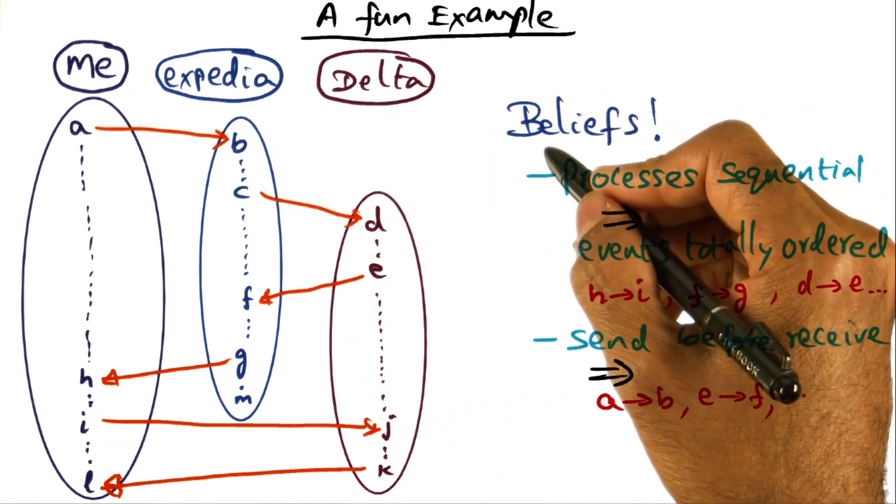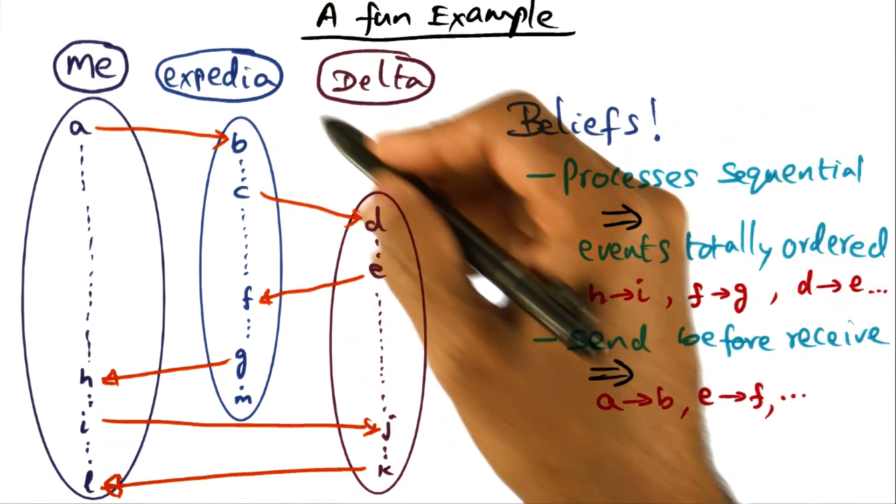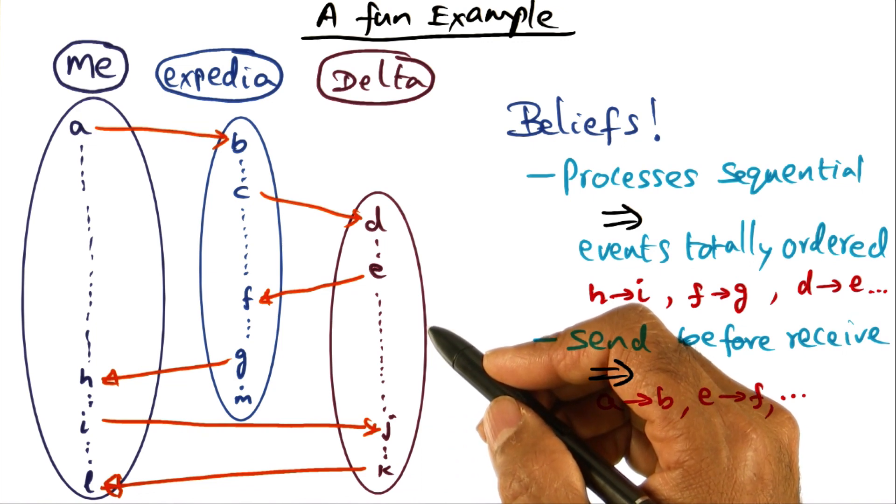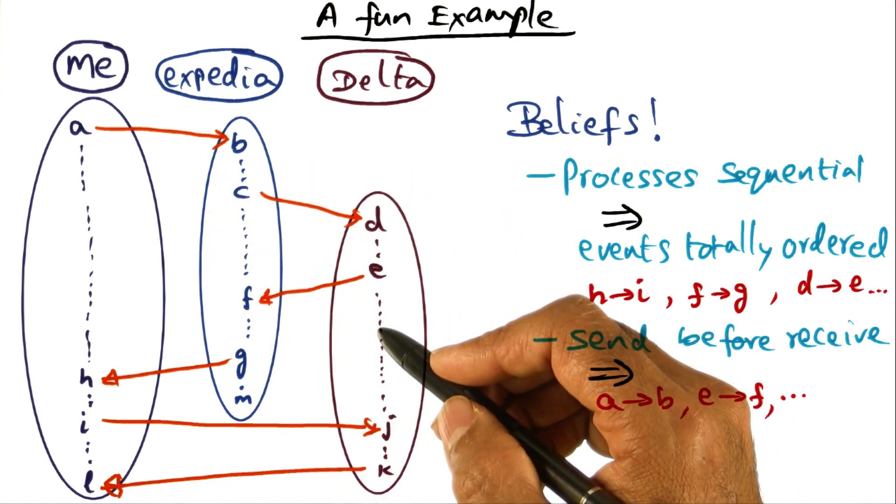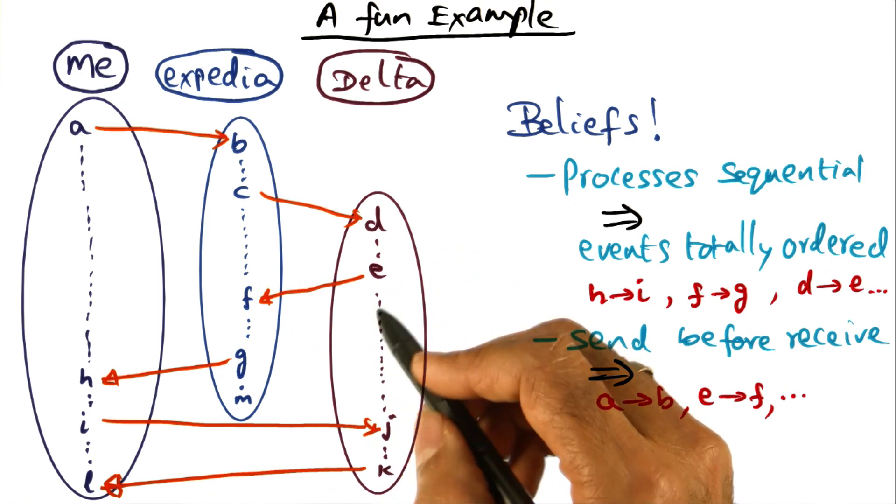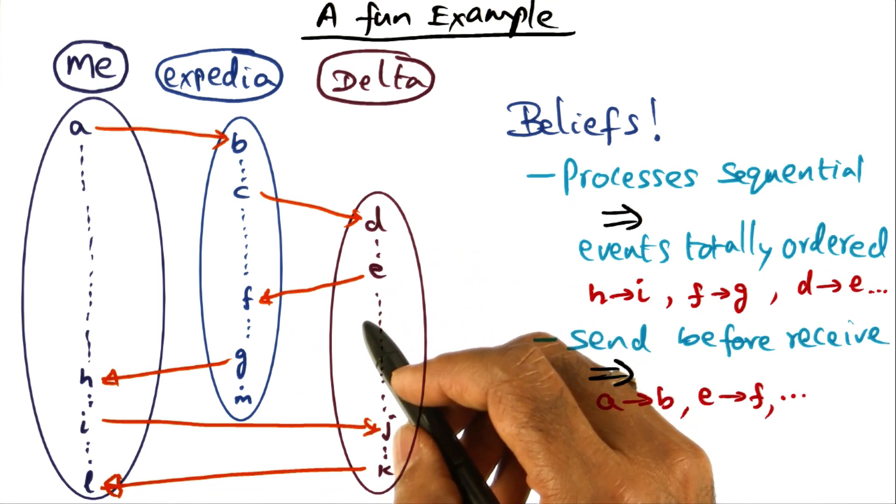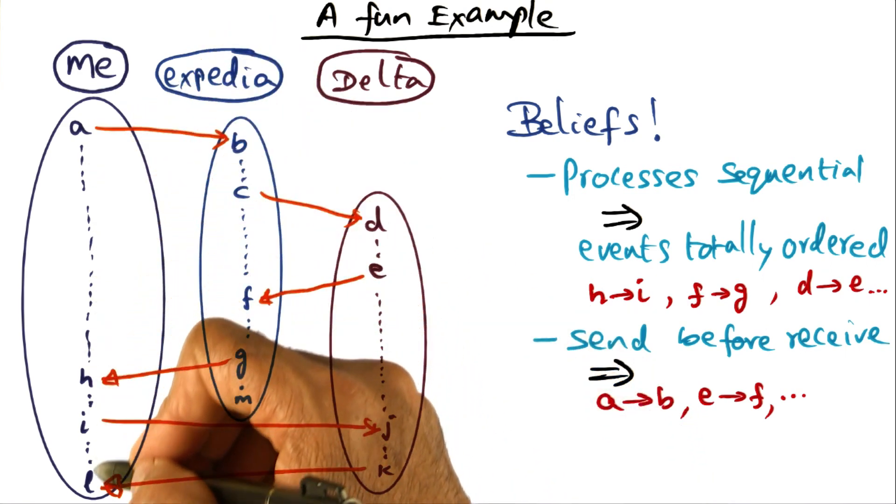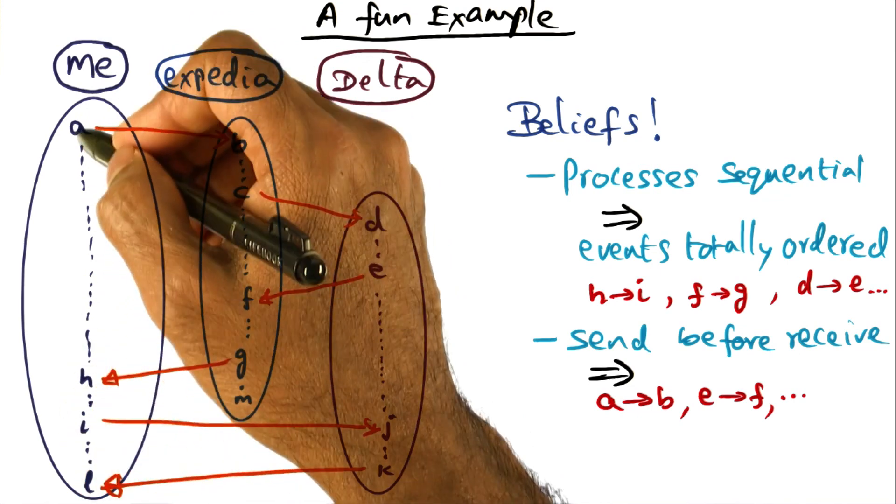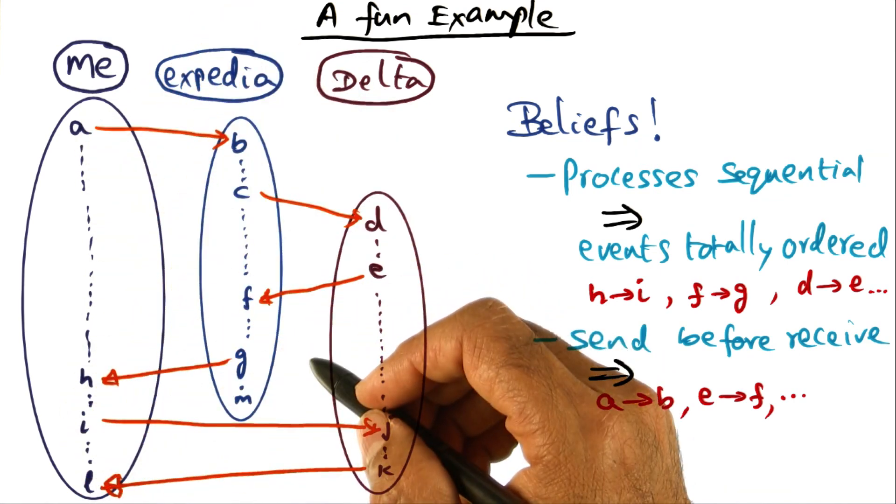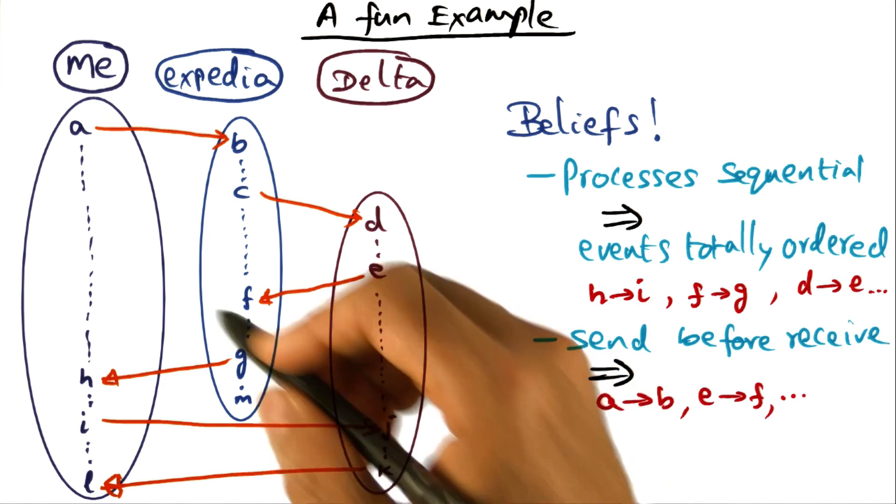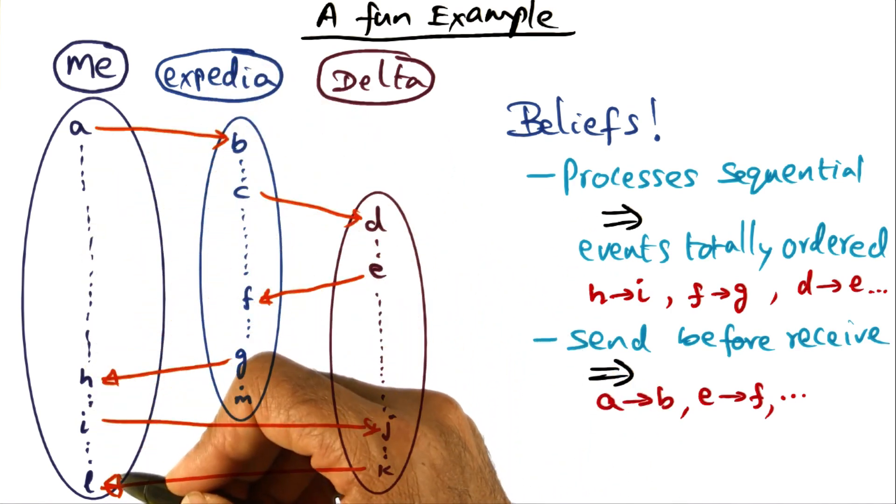There are set of beliefs that are ingrained in this picture here about the ordering of events in the distributed system that makes all of this work. In particular, when we look at the set of events that you're seeing here as events that I'm responsible for, we think that these events are happening in sequential order.